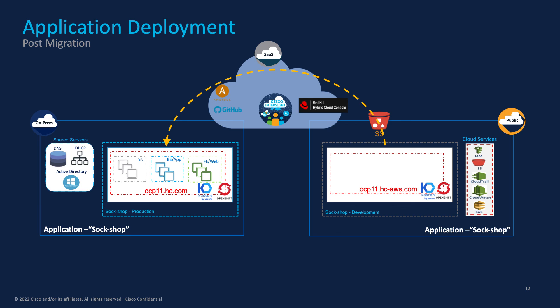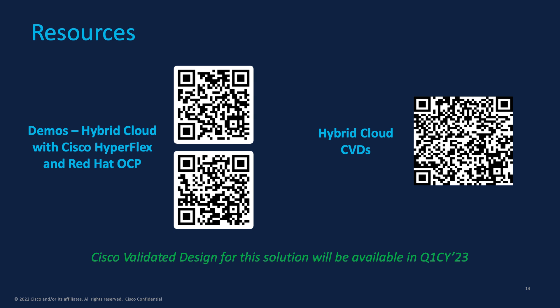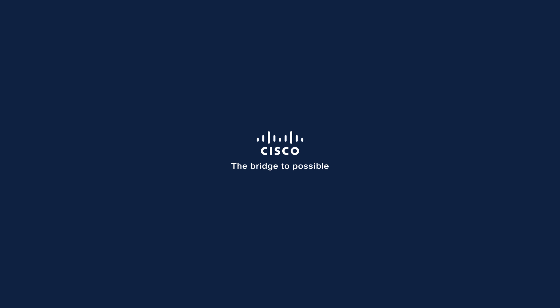Kasten K10 also provides a multi-cloud manager that you can use to centrally manage and provision Kasten K10 in both environments, further simplifying this process. We are currently working on a Cisco-validated design for the solution in this demo. To access the previous hybrid cloud demos, scan the QR code provided in this slide using your mobile device. This concludes this demo. Thank you.